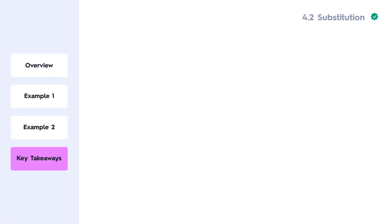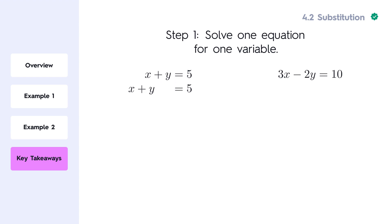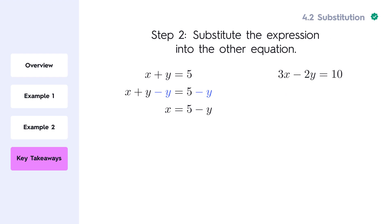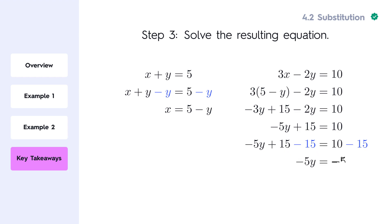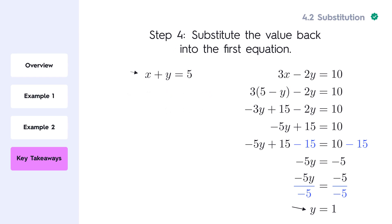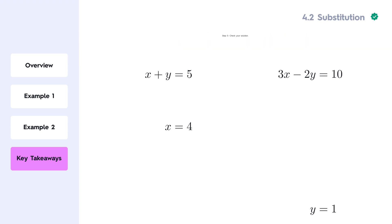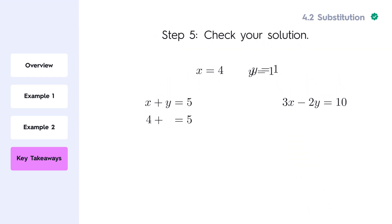Great job today! Let's recap the key concepts we covered about solving systems of equations using substitution. To solve a system of equations using substitution, we first solve one equation for one variable. Next, we substitute the expression for the solved variable into the second equation. Then, we solve the resulting equation to find the value of the first variable. After that, we substitute this value back into the original equation to find the second variable. Finally, always check your solution by plugging both values back into the original equations.